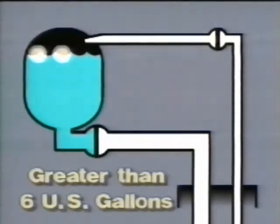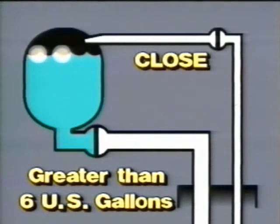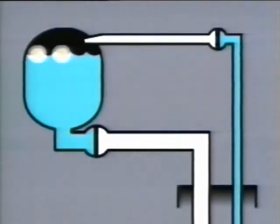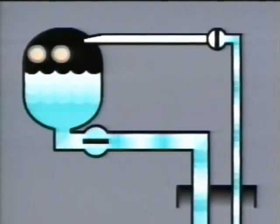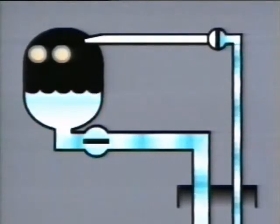The pre-charge control valve is located in the rinse line between the service panel rinse fitting and the tank spray nozzle. When a tank's quantity is greater than six U.S. gallons, the pre-charge valve will close. With the valve closed, service personnel cannot rinse and service the tank, ensuring the tanks are properly drained before servicing can be completed.